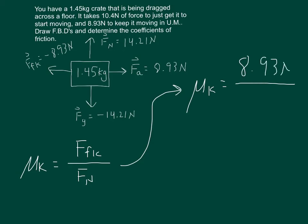8.93 Newtons. Sign doesn't matter. 14.21 Newtons. And when we divide, the Newtons will cancel out. It is called a coefficient which means it's just a number.